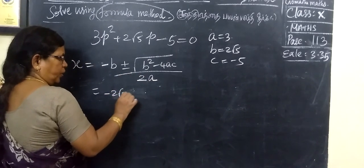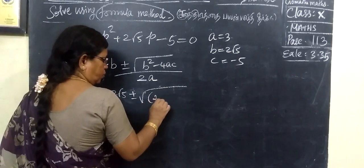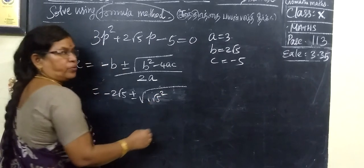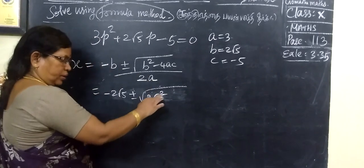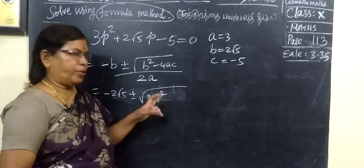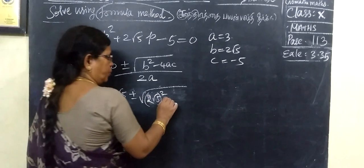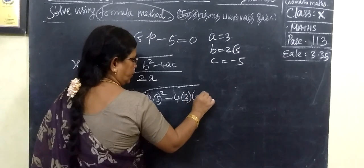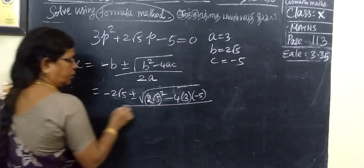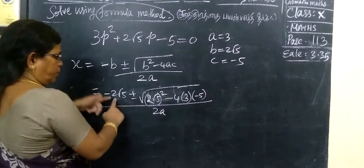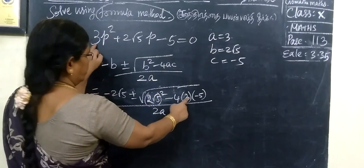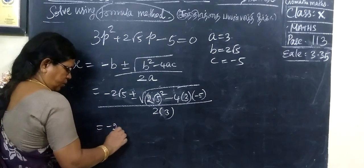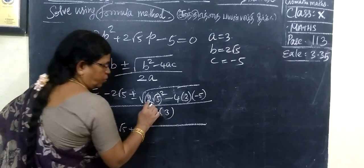Just write: 2 root 5, plus or minus root of (2 root 5) whole squared. A common mistake students make is to just write root 5 squared. Minus 4, and what is a? 3. Then c is minus 5. Then 2a. So, minus b plus or minus root of b squared minus 4 into a into c, by 2a. a is 3.